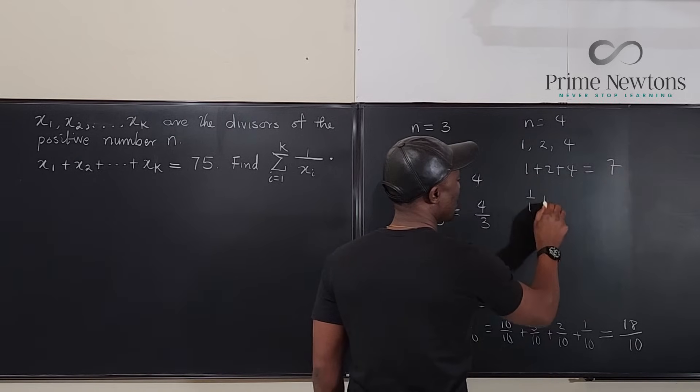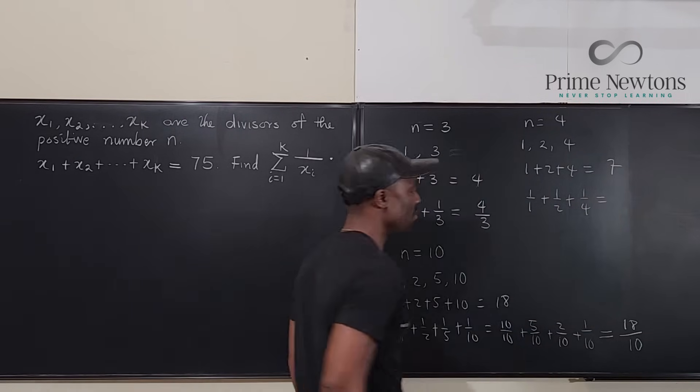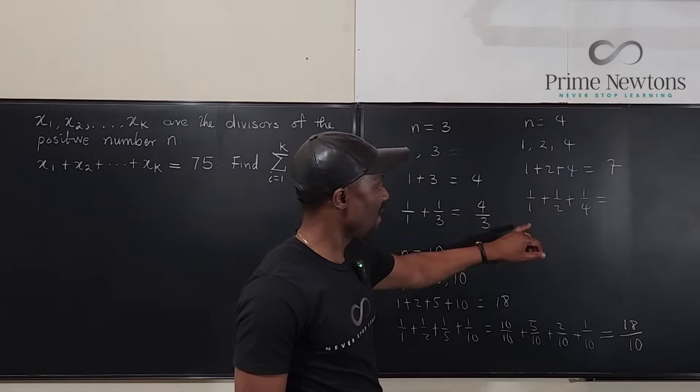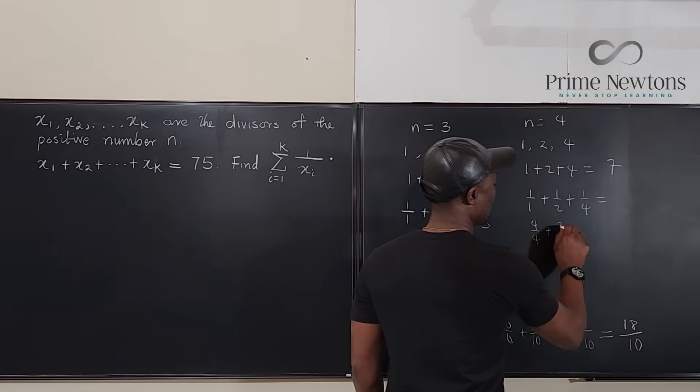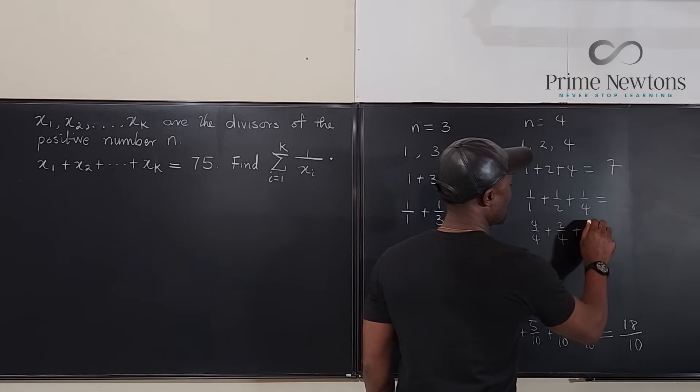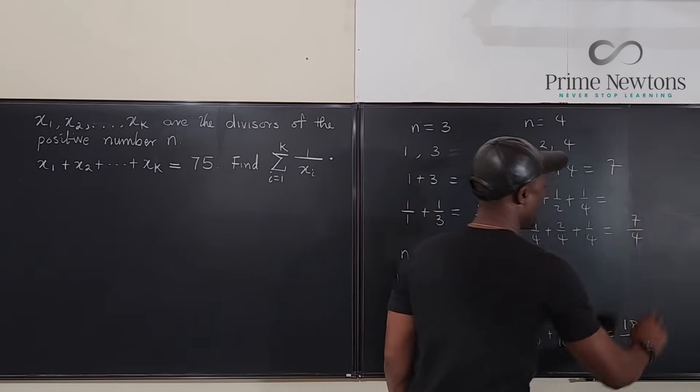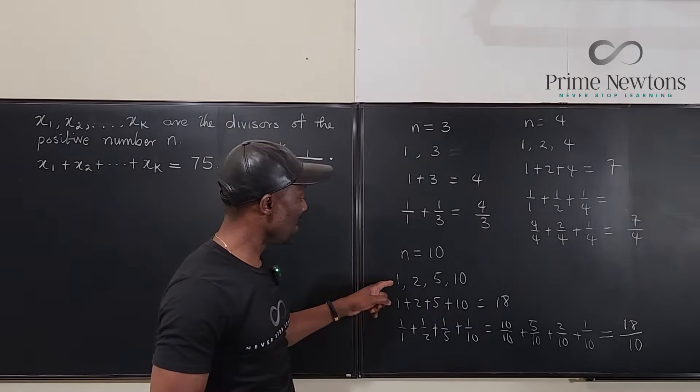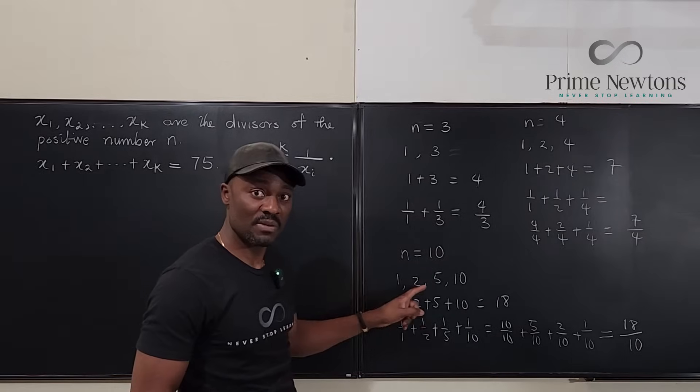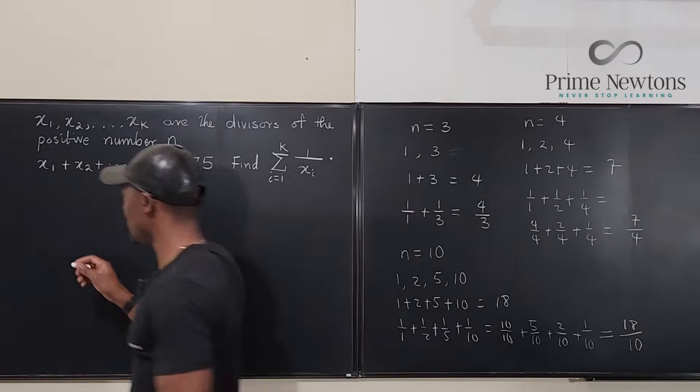And 1 over 1 plus 1 over 2 plus 1 over 4 is going to be equal to, let's see what we get. This is going to be 4 over 4 plus 2 over 4 plus 1 over 4. That gives us still 7 over 4. Just as I arranged the numbers from the smallest to the biggest, I'm going to try to arrange the numbers. We're just going to make that assumption.